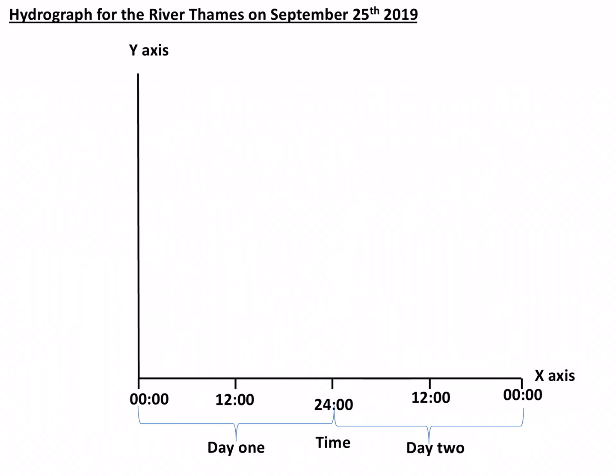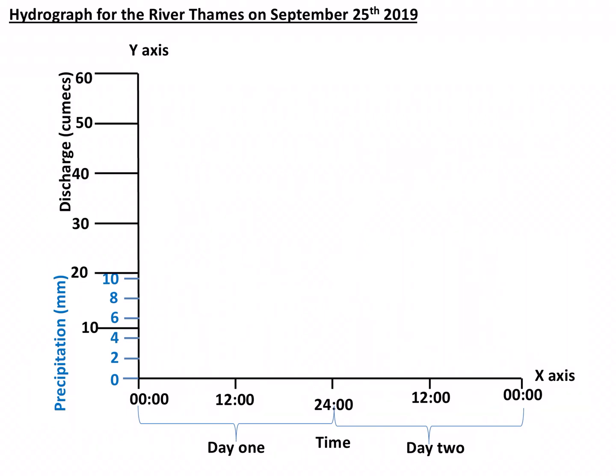The first variable is precipitation, measured in millimetres. The second is discharge, measured in cumecs — which is the amount of water flowing through a particular point in the river every second.